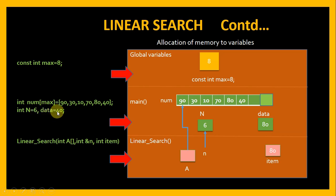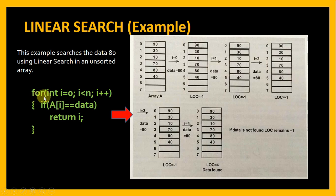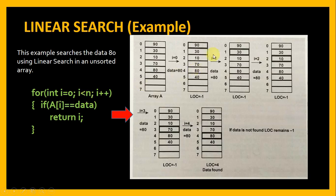In the memory diagram, the global variable max has value 8. In main, the array num of size 8 is initialized with six values — and you can see that this array is not sorted. N is the total number of elements which is 6, and data which we are looking for is 80. In the linear search function, array a points to num. N and n share the same memory space because it is passed by reference, and item contains the value 80.